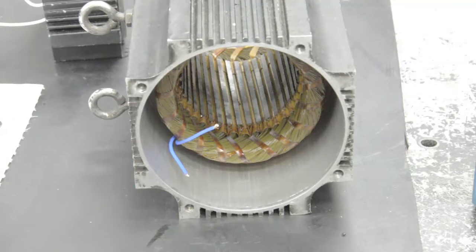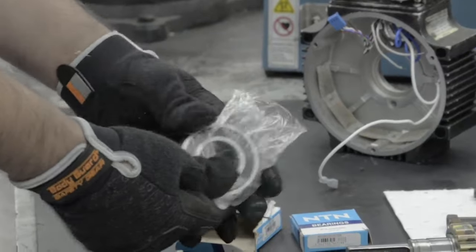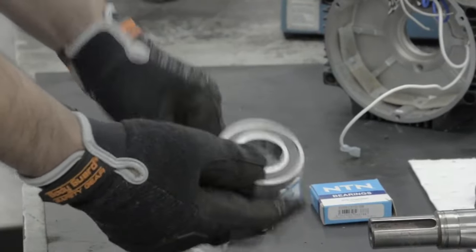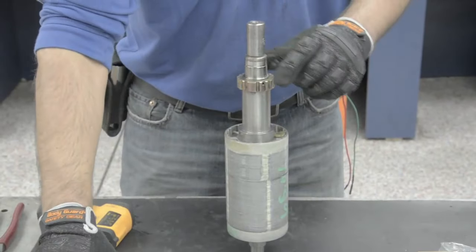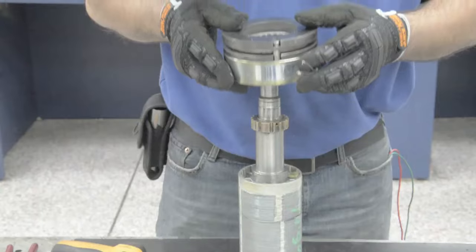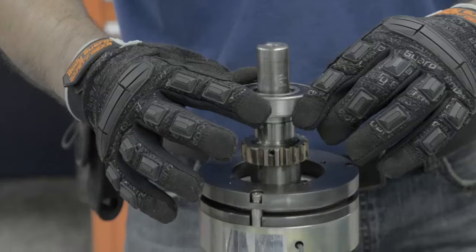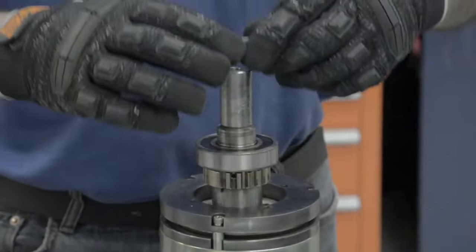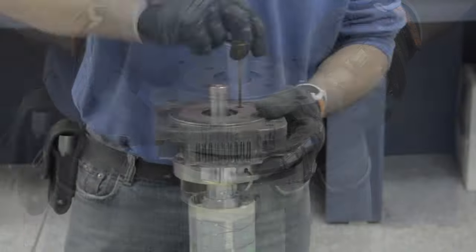Now that our motor is all cleaned, it is ready for new bearings and reassembly. We use high quality bearings that meet or exceed all manufacturer's specifications. First, we will heat the bearing. While we wait on the bearing, we'll put the brake back on. Quick test of the bearing. And now we will place the new bearing onto the motor. Some new seals. And we'll reinstall the front end bell.